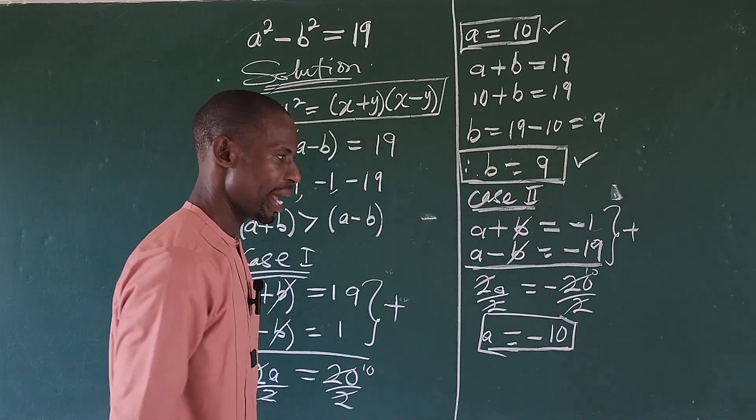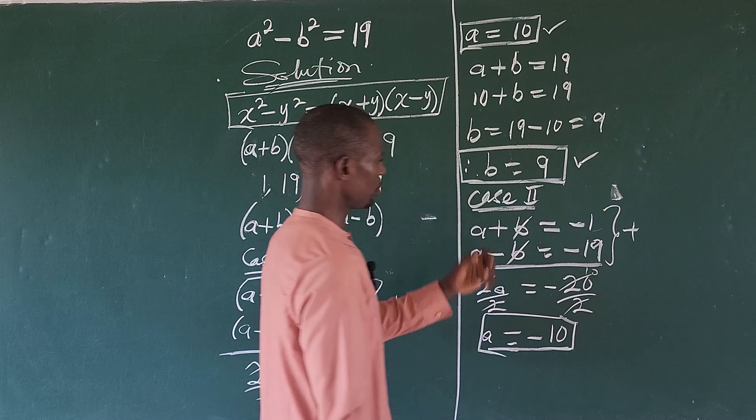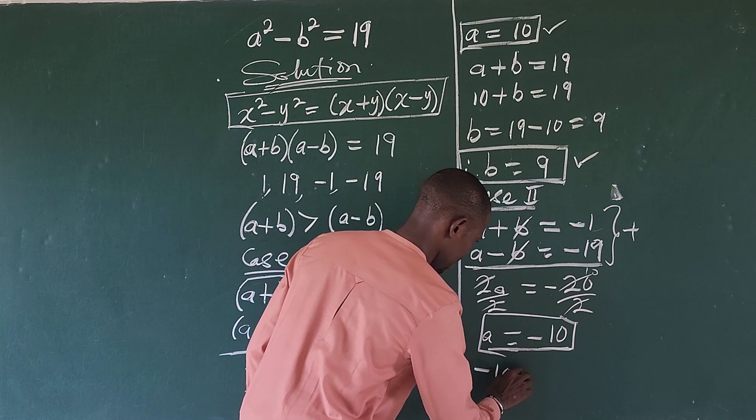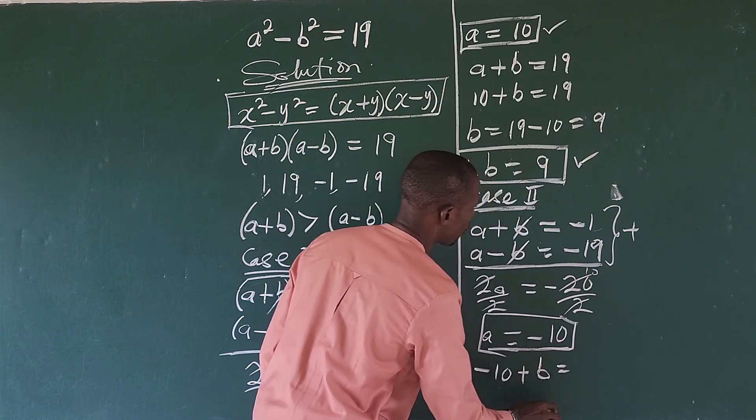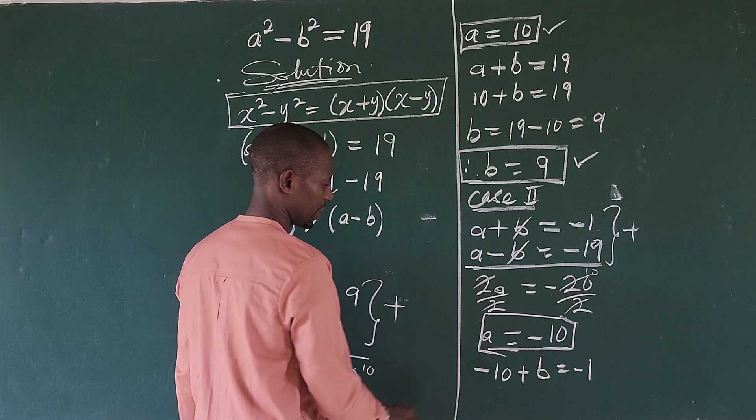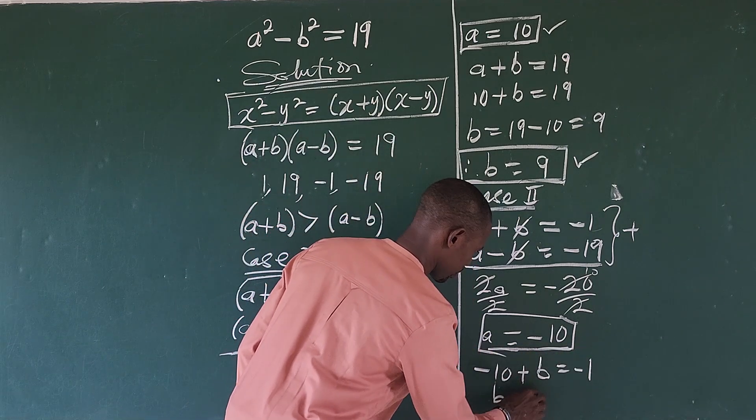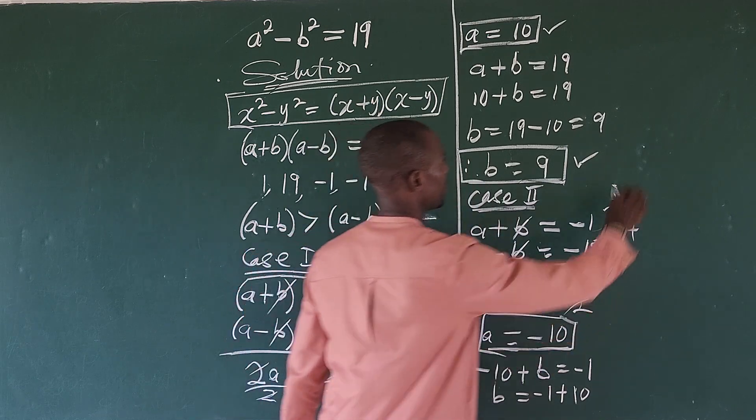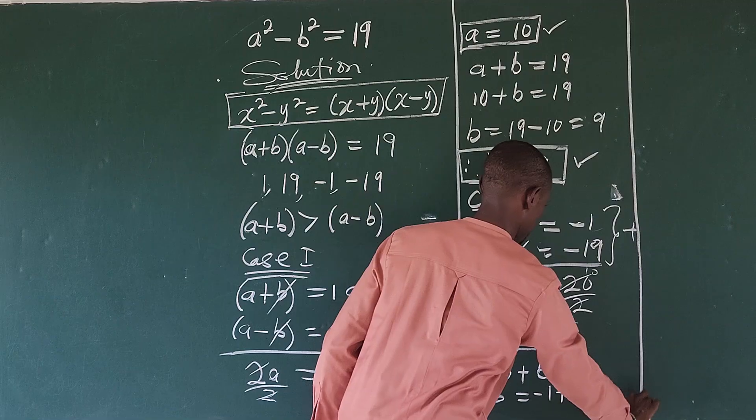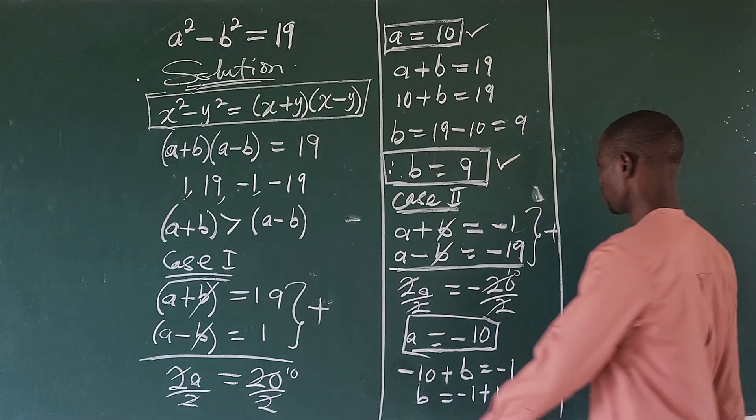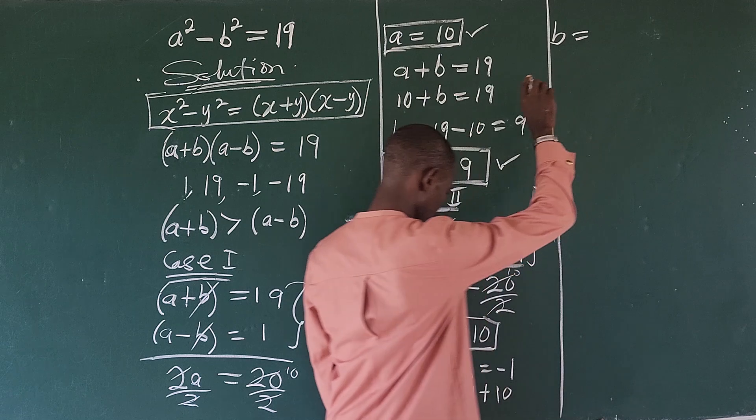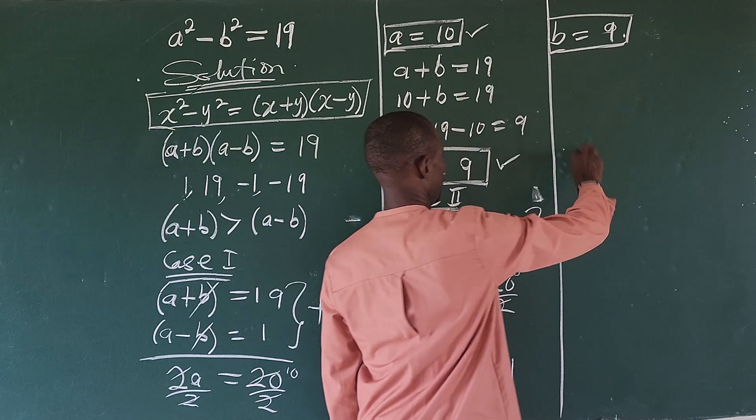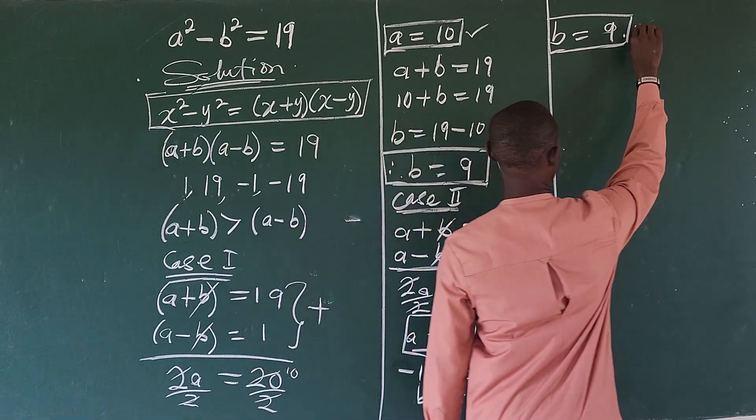So if we have this to be -10, again we put the value of a into the first equation. So this will give us -10 + b = -1. So move this to this side. So we have b = -1 + 10. So if we carry out the operation here, b will now be equal to positive 9. So we have this for second case and this also.